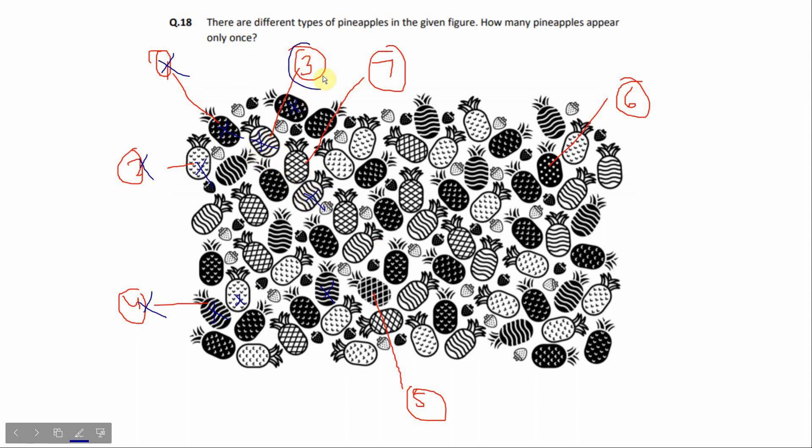One is also repeating. The sixth one is not repeating. So here is our first type and fifth is not repeating. Here are two types again, repeating. So if you cross it, there are only two pineapples which appear only once.